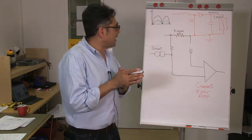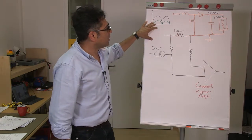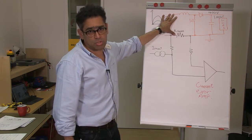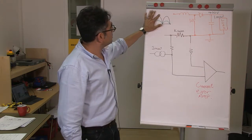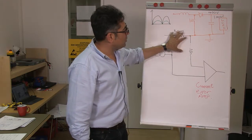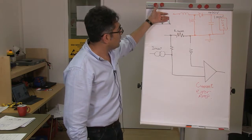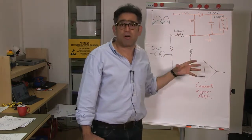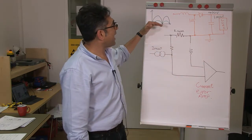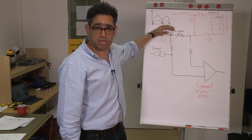The issue we have here is that the input to the boost power stage — this is an average current mode continuous conduction mode boost — is a rectified sine wave. You cannot measure the loop whilst the input is changing like so, mainly because it's changing the reference of the error amplifier for the current. So you're going to have to freeze this in time and then make your measurement.